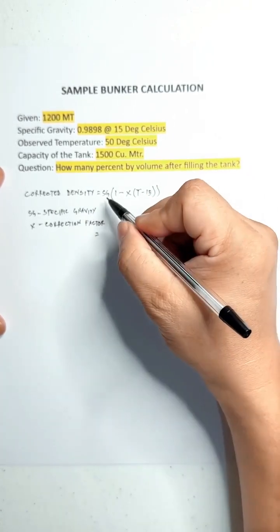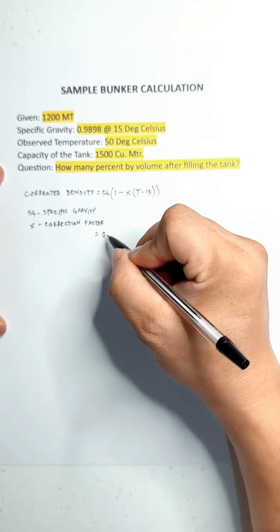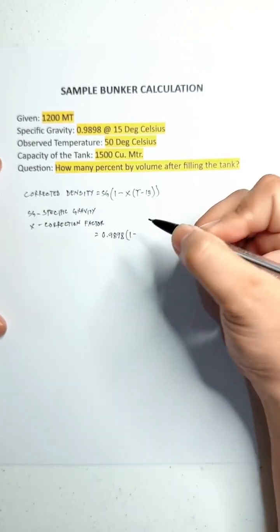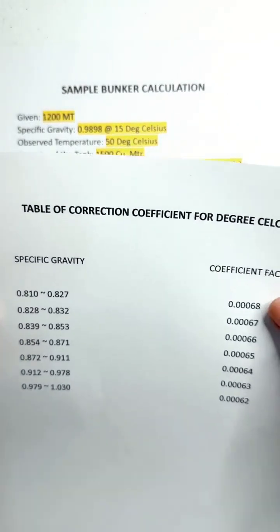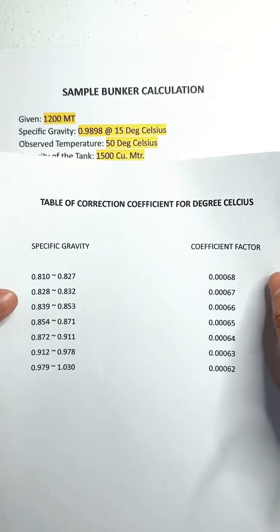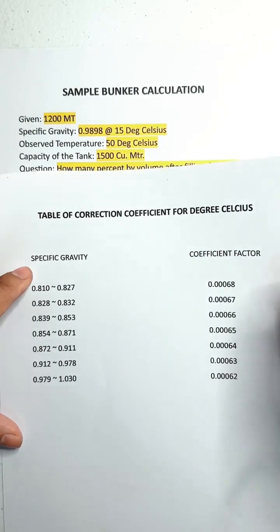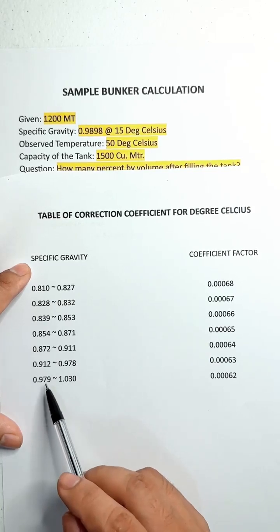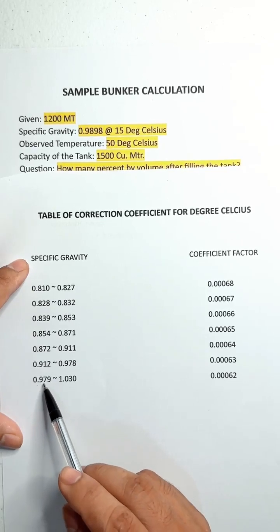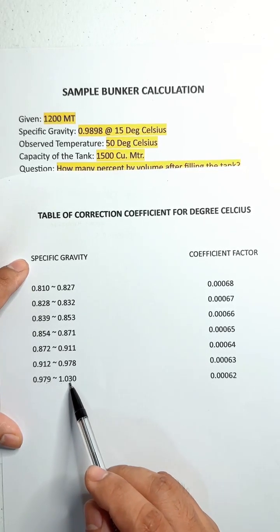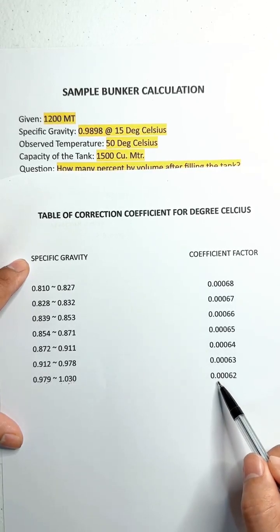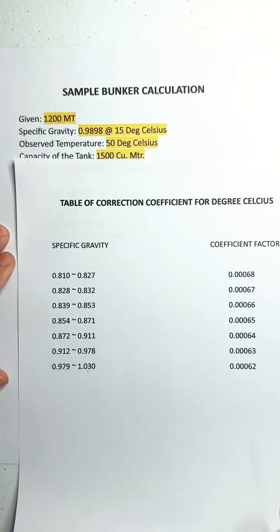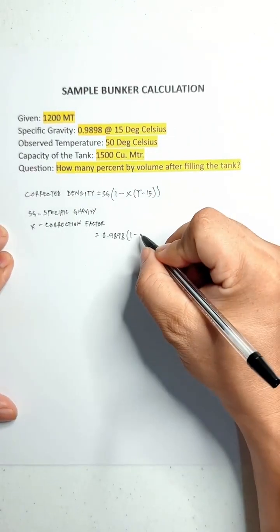We have the SG which is 0.9898 times 1 minus. We will refer to the table of correction coefficient per degrees Celsius. The specific gravity from the given data is 0.9898, so we will use the range from 0.979 to 1.030, which has a coefficient factor of 0.00062.